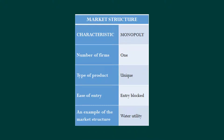Here we've got our second market structure. The four market structures could be organized by degree of competition, where perfect competition is the most competitive and monopoly would be the least competitive. We see here our three key characteristics. For perfect competition there were many firms; with monopoly there will be one.